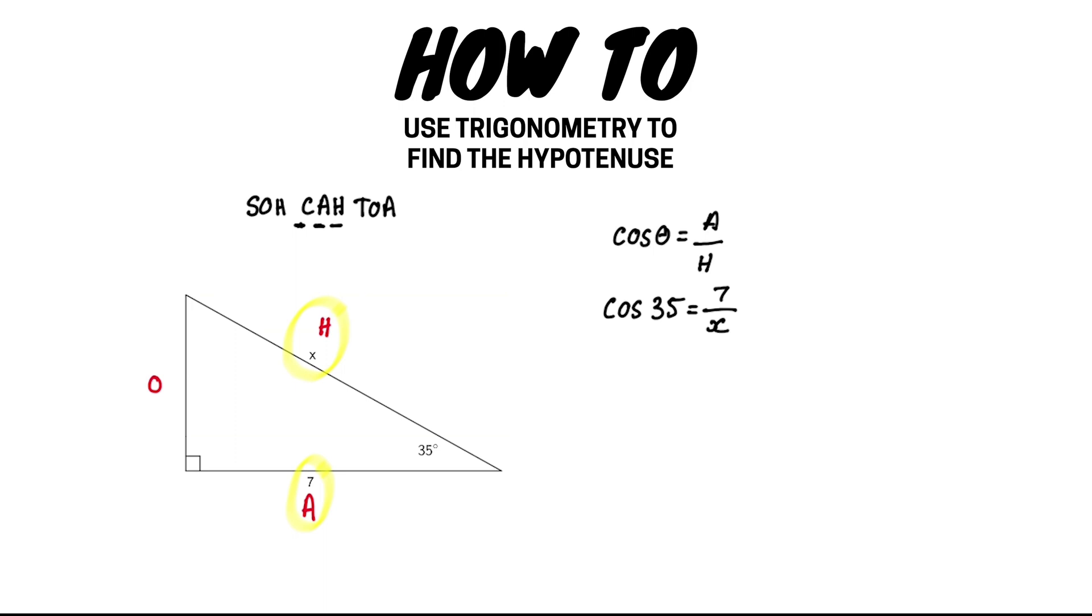It is important to note that when x, or the unknown value, falls in the denominator of the fraction, we have to complete an extra step to ensure that we solve this equation properly. Firstly, multiply both sides of the equation by x. This gives us x times cos 35 equals 7.